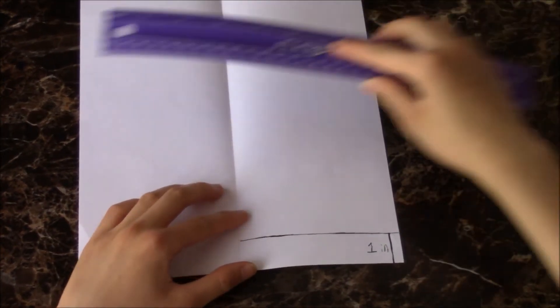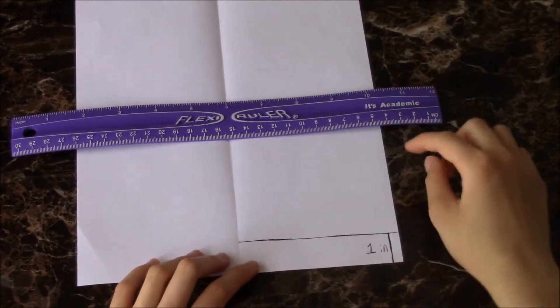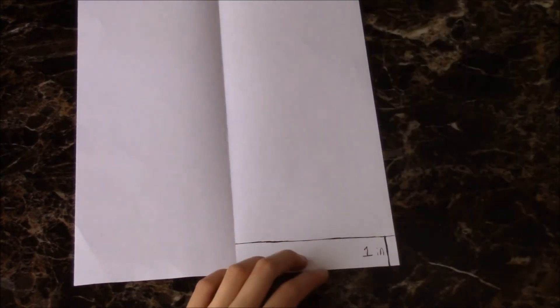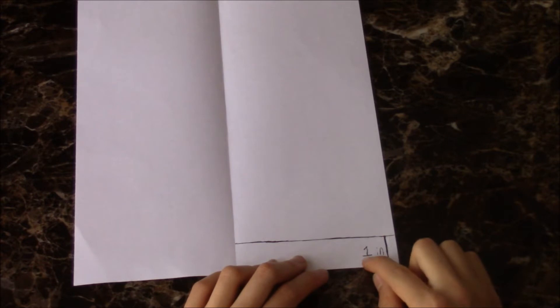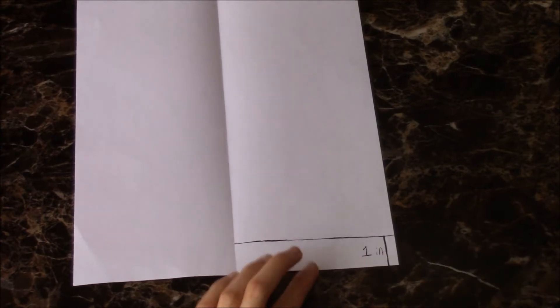For this next step, I use a ruler. It's not necessary. An estimate is okay. So I use the ruler to make a one inch mark. Here it is. It's the vertical line from the bottom edge of the paper to the line I drew. That's an inch.